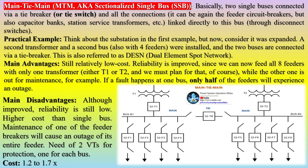Complete shutdown can be avoided by sectionalizing the main bus with the provision of an additional single-phase bus PT for synchronization in case of more than eight bays. This scheme has been used particularly for step-down substations, as busbar faults are rare.